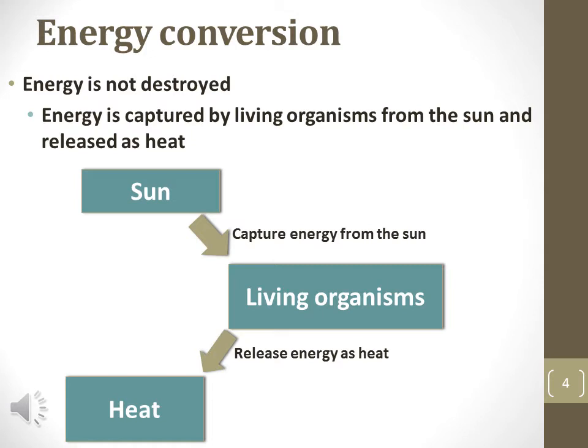Light energy is captured by living organisms called photoautotrophs. These organisms use sunlight to store energy in chemical bonds by forming sugars. Sugars and the energy stored in them can then be used to create other types of organic molecules like proteins and lipids. This diagram shows how living organisms use the Sun for light energy and how living organisms give off some of the energy they store as heat energy.